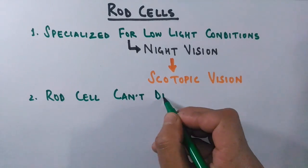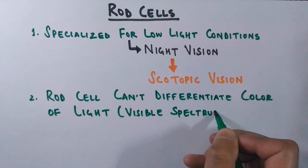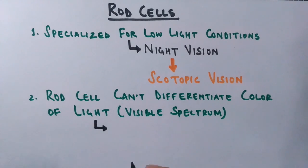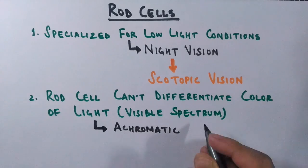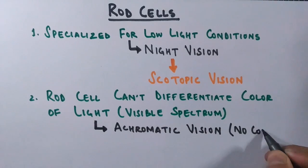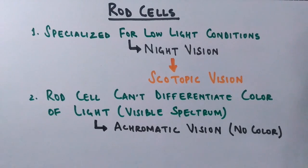Rod cells cannot differentiate between colors of light. There is a visible spectrum with many colors in it, but rod cells cannot differentiate the colors in this spectrum. So we get achromatic vision — that is a colorless sight — and for this vision our eyes have millions of rod cells to accommodate vision in low-lit conditions.